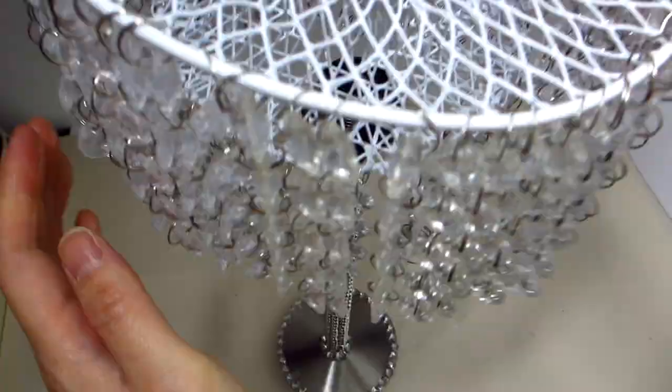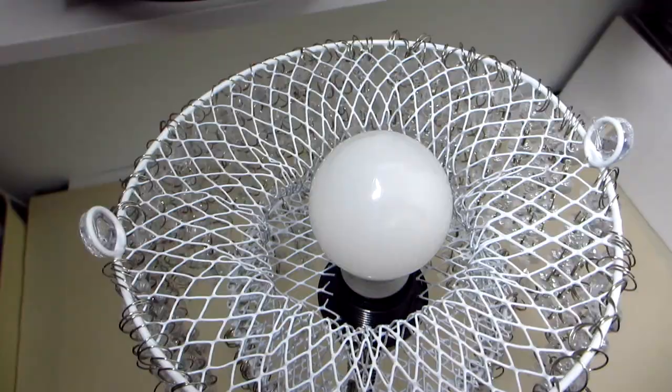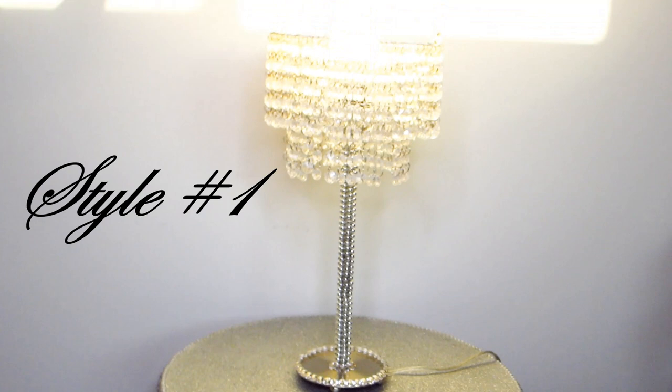The last step is to rest the lampshade onto the receptacle and then screw a light bulb in. And here you have it. Style number one for our elegant lamp is complete. However, we are not done yet as we have a second style to create.